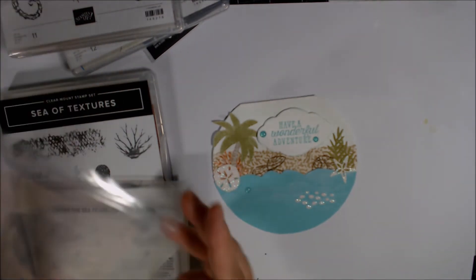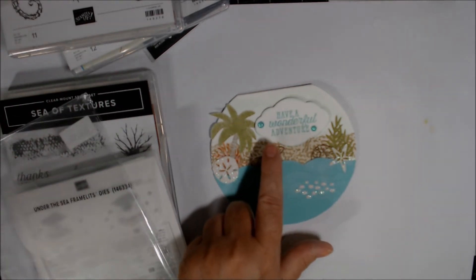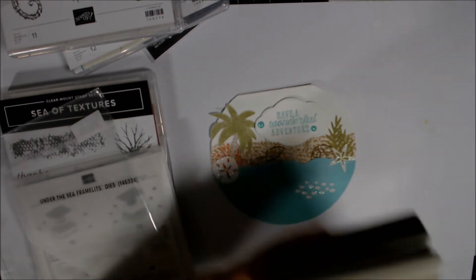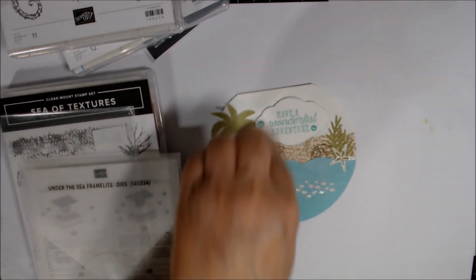And let's see what else. Okay, this I showed you. That's stamped in Coastal Cabana. But then I used the Pretty Label Punch because I thought it looked the most like a cloud up in the sky.